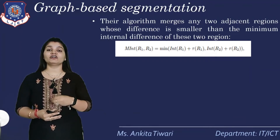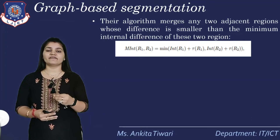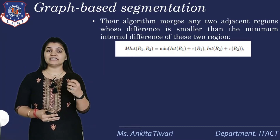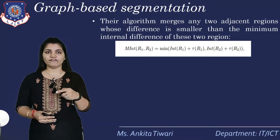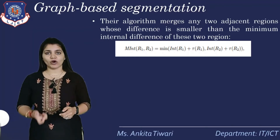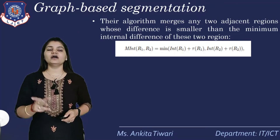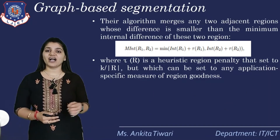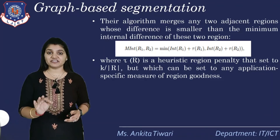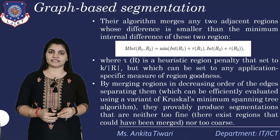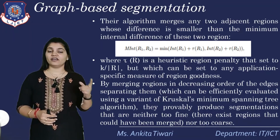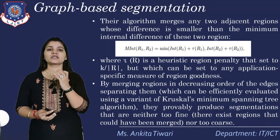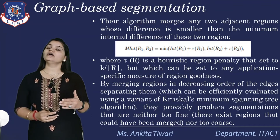We have to keep in mind what the minimum will be. The minimum internal difference, MInt of R1 and R2, is equal to the minimum of: int(R1) plus tau(R1), and int(R2) plus tau(R2). This is the minimum requirement for finding the internal difference between the two regions we want to merge. Where tau(R) is the heuristic region penalty set to K divided by |R|, but which can be set to any application-specific measure of region goodness. By merging regions in decreasing order of the edges separating them, we apply what is known as Kruskal's minimum spanning tree algorithm.